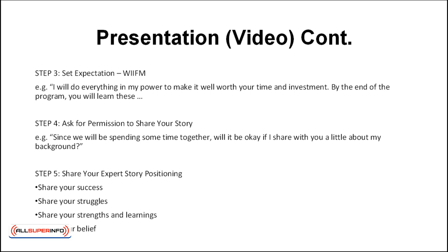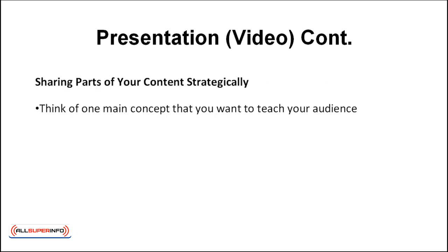Step five: share your expert story positioning — share your success, your struggles, your strengths and learnings, and your beliefs. Next, phase two: share parts of your content strategically. Think of one main concept you want to teach your audience and break it into three secrets you're going to share with them. The three secrets are to answer the three biggest objections your audience may have. For example, 'The biggest myth is, most people think... Here is the reason why people find it hard. It's because…' Turn common objections into three things you will share with them.